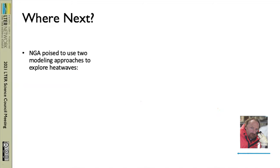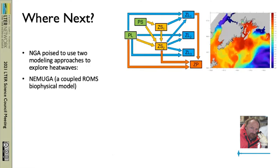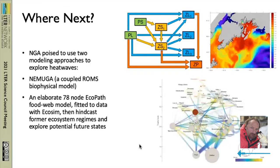So where are we going next? The NGA plans to use two modeling approaches to explore heat waves. We have our classic ROMS-type biophysical coupled model, which we're going to use with a very simplified version of community structure driven by very high-resolution physics. And we're starting to do a very elaborate ecotrophic path modeling of the system, which really emphasizes community structure and species interactions — to characterize the community and then run simulations and hindcasts to see if we can pinpoint how the community changes with regime shifts and heat waves, and potentially project future states.